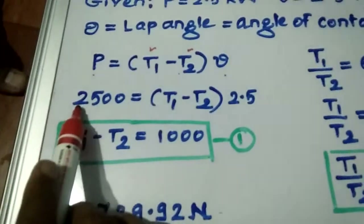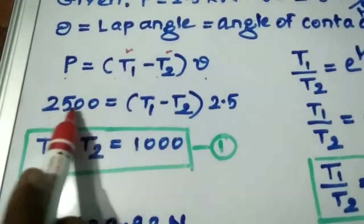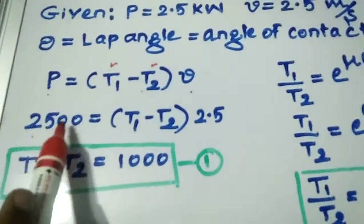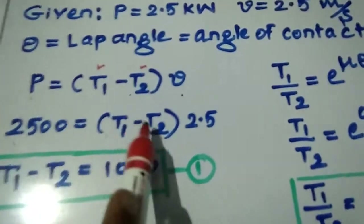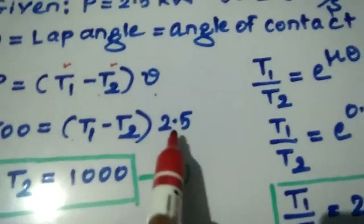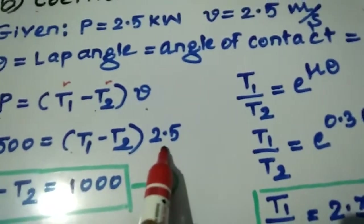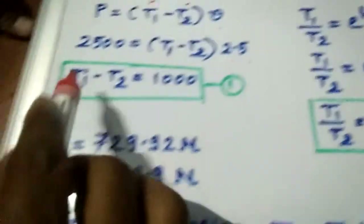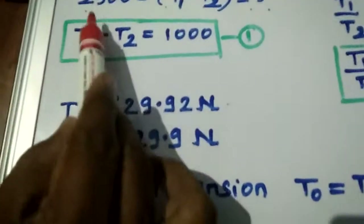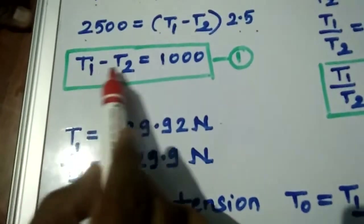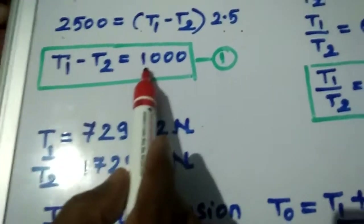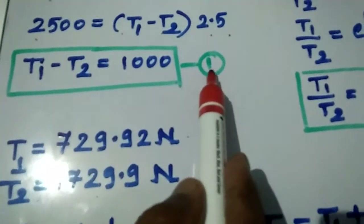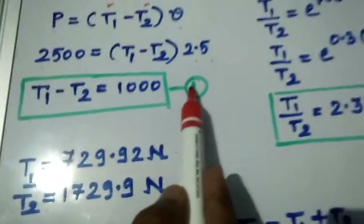The power is given as 2.5 kilowatt, that is 2500 watts. Using P equal to T1 minus T2 into V, with V equal to 2.5 meter per second, we get T1 minus T2 equal to 1000 Newton. Take this as equation 1.